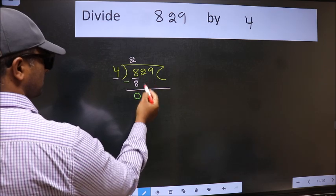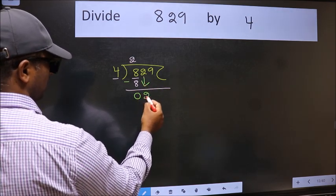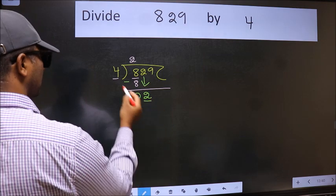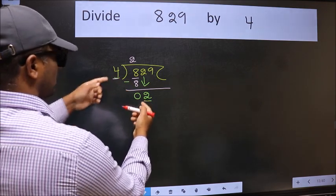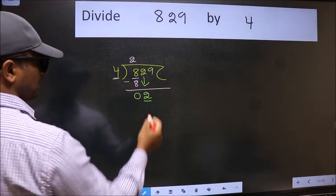After this, bring down the next number. So 2 down. Now here we have 2 and here 4. 2 is smaller than 4. So we should bring down the second number.